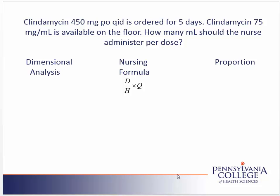We can solve this problem using one of three approaches. We'll start with the dimensional analysis approach. In the dimensional analysis approach, we'll start with the ordered amount, which is 450 milligrams, and place that over one.